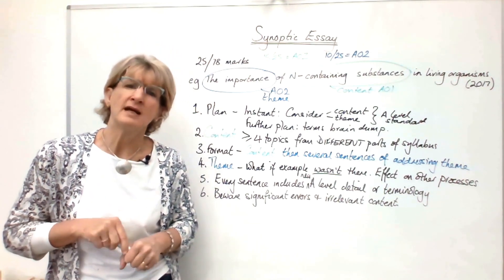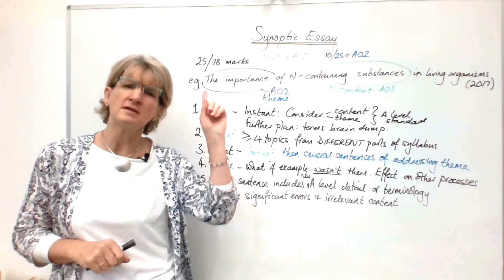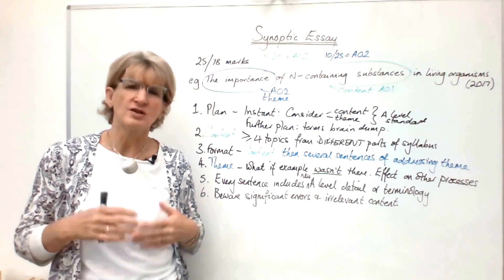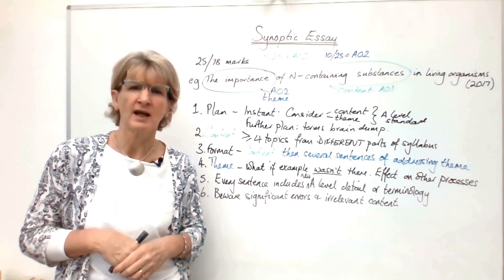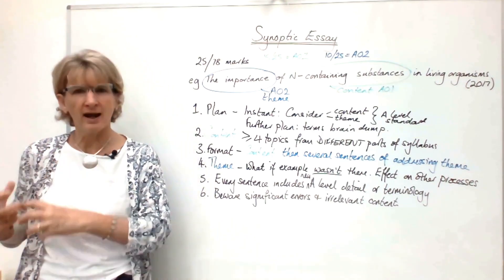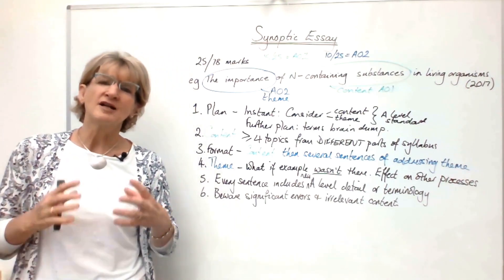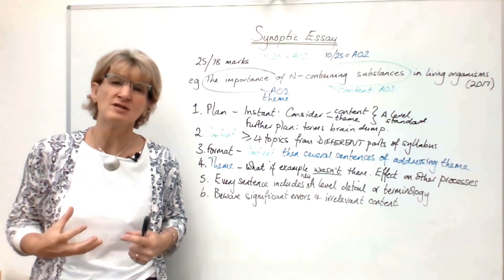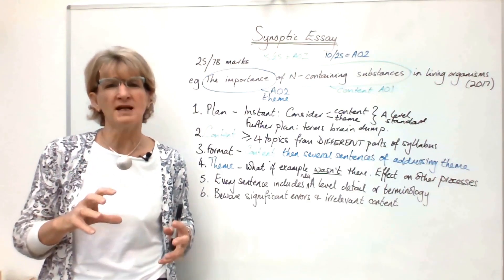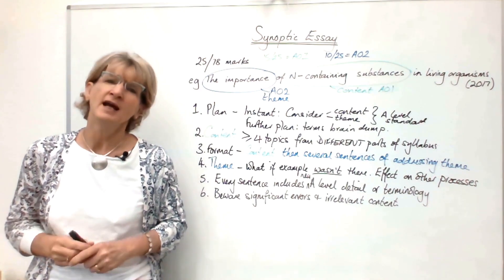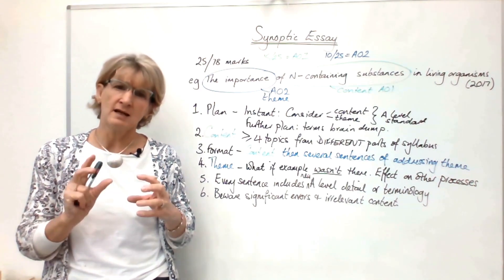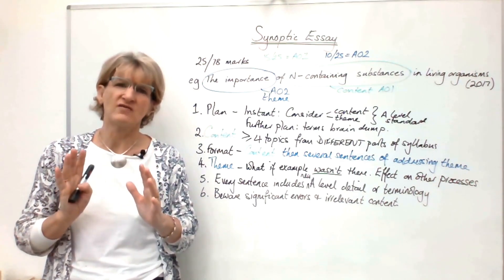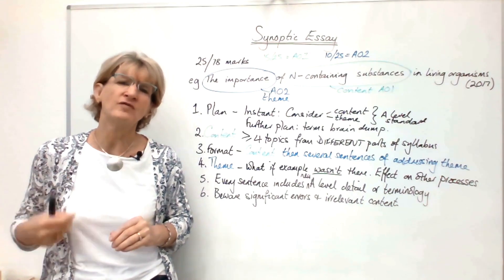My final tip is going to be for those students who are absolutely aiming for A-star quality essays. You're going for the top marks, the 24, 25 out of 25. And this is where you have to include something that is extra to the specification. In your textbook, you have sections marked with a purple plus sign, which means extra to the specification. It might be worth you reading a few of those and thinking about how those extra bits could be applied to a number of different essays.